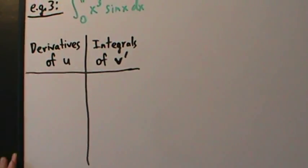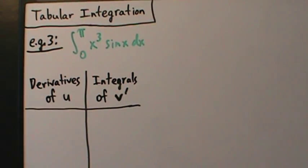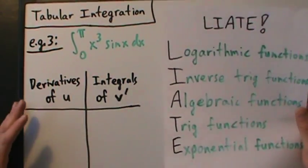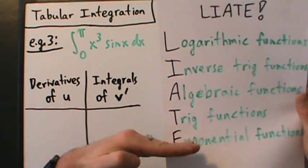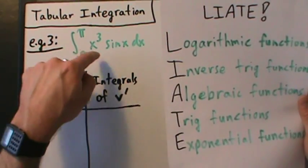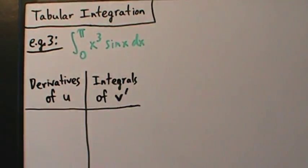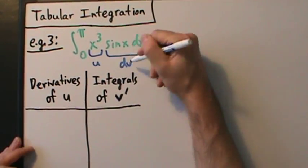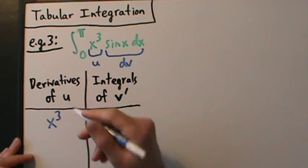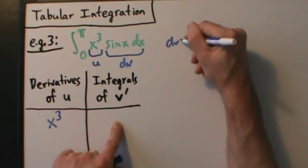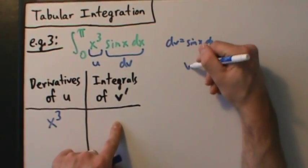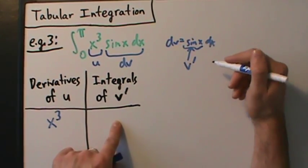How do we pick u? Remember, tabular integration really just is integration by parts — literally integration by parts, just compactified to make things quicker and easier. So we choose u the same way we always do with integration by parts. We have an algebraic function and a trig function. Going down the list, algebraic functions appear first, so we choose u to be the algebraic function: u is x³. That means dv is everything else left over. v-prime is just dv without the dx, so dv is sine of x dx, meaning v-prime is sine of x.